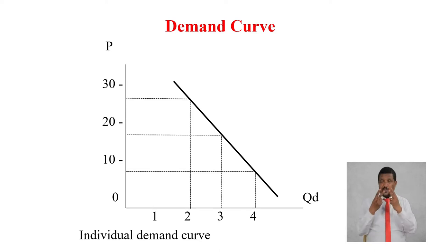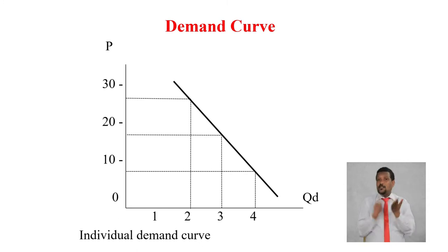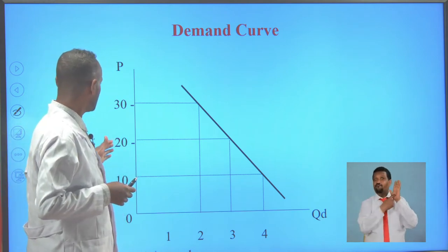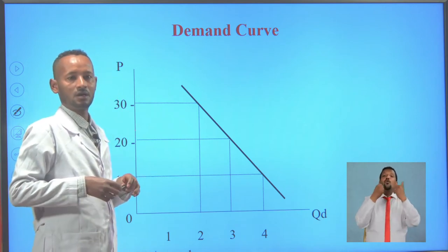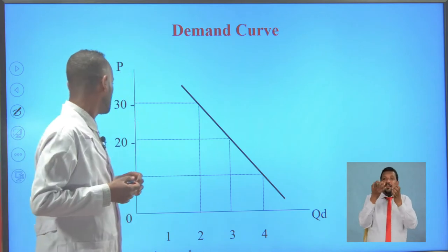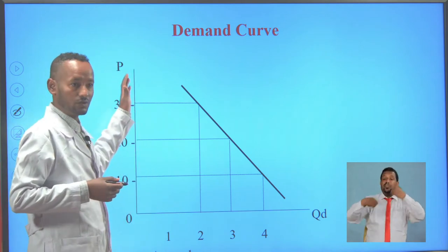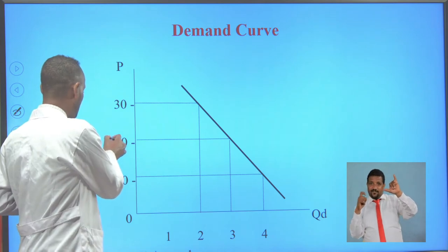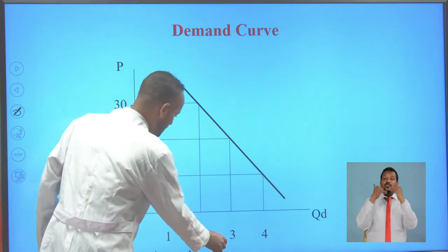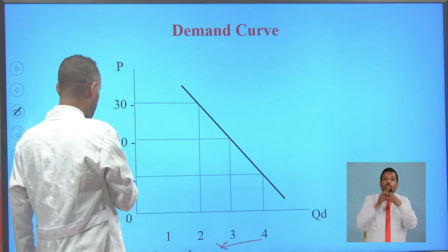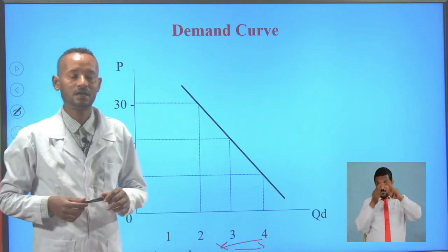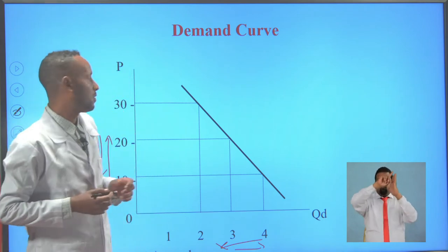The demand curve is a graphical presentation of the demand schedule, representing all values of price on the y-axis and all values of quantity demanded on the x-axis. The slope of the demand curve is negative because there is an inverse relationship between the two variables — as price increases, quantity demanded declines, and as price decreases, quantity demanded increases. Due to this inverse relationship, the slope of the demand curve is always negative.